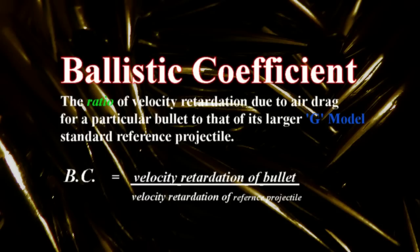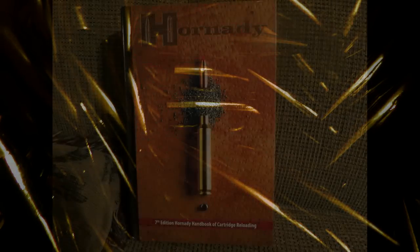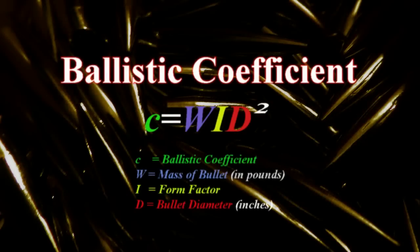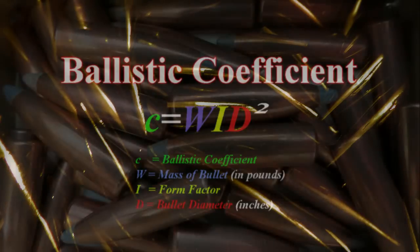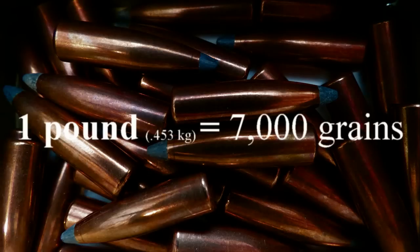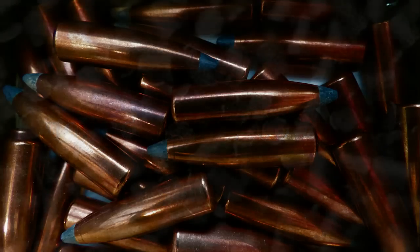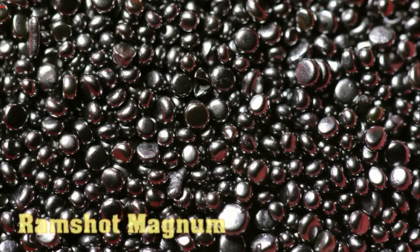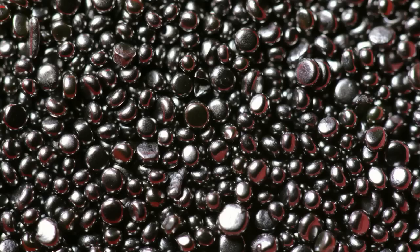Looking at the formula from the Hornady ballistics manual: C equals the ballistic coefficient, and you simply take the mass of the bullet in pounds. If you have a 180-grain bullet, there are 7,000 grains per pound in weight — grains are a weight measurement. A lot of guys get confused thinking grains are individual flakes of powder, but when you weigh out 43.1 grains of powder, that's 43.1 grains in weight, not 43 little flakes. Bullets are also measured in grains.